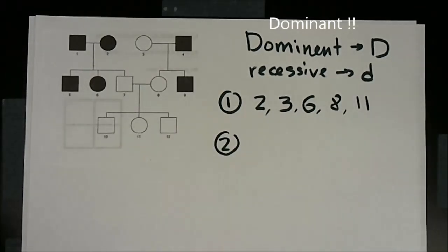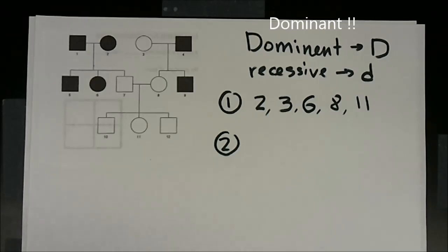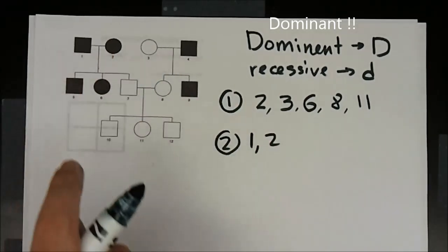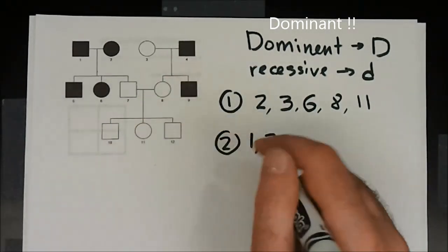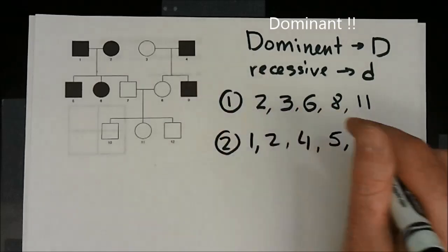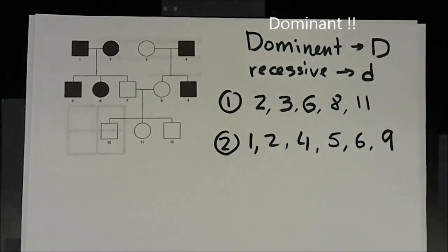Question two: which members of the family are expressing the trait? On a pedigree, shaded shapes indicate the trait is expressed. The shaded members are 1, 2, 4, 5, 6, and 9 — all of those are expressing the trait, whatever it may be.